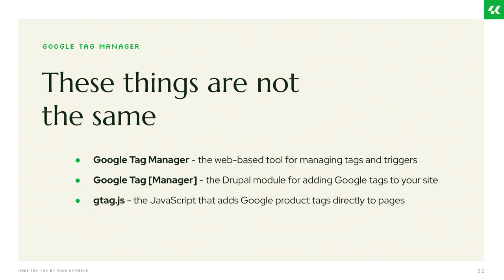One thing I wanted to clarify: the term 'Google tag' gets repeated a lot but sometimes means different things. Google Tag Manager is the web-based tool for managing tags and triggers. There's also a Google Tag module — a Drupal module that allows you to integrate that into your Drupal site; it used to be called 'Google Tag Manager' but has been renamed to just 'Google Tag.' And then there's gtag.js, the JavaScript that's technically doing the work of putting the script on the page. These are interrelated layers but not the same thing.